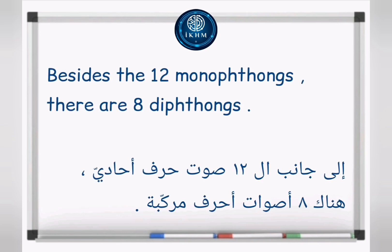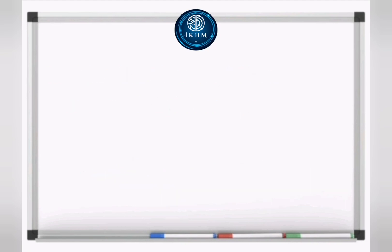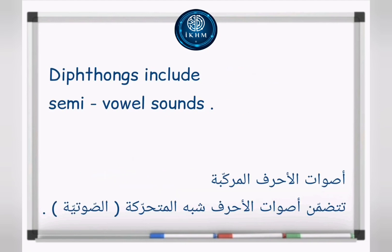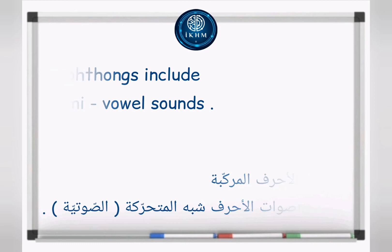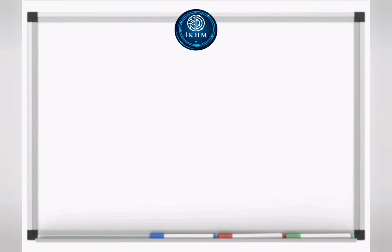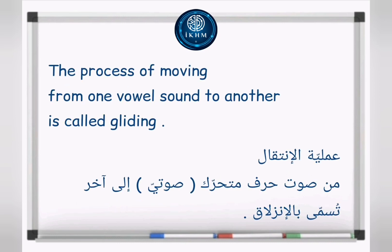Besides the twelve monophthongs, there are eight diphthongs. Monophthongs include semi-vowel sounds. The process of moving from one vowel sound to another is called gliding.